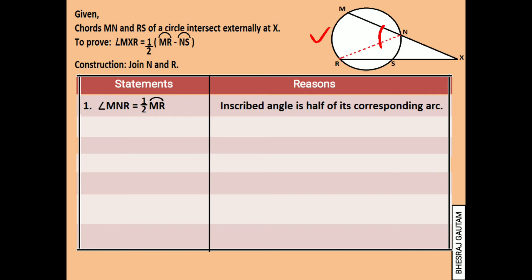Following the similar property as statement one, we can say that angle NRS is half of arc NS, as shown in the figure, which is the arc that makes the angle.